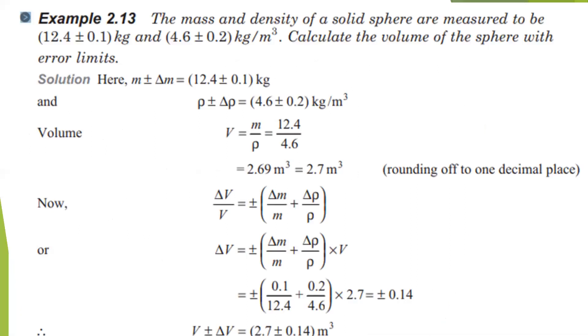Now we will see this question involving division. Write mass value: m plus or minus delta m equals 12.4 plus or minus 0.1 kg. Density is given: rho equals 4.6 plus or minus 0.2 kg per meter cube. We know that density equals mass by volume, so volume equals mass by density.